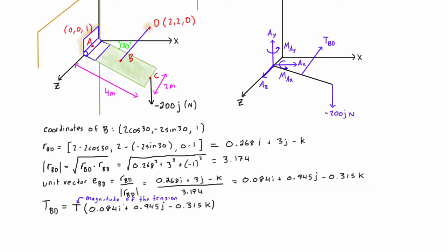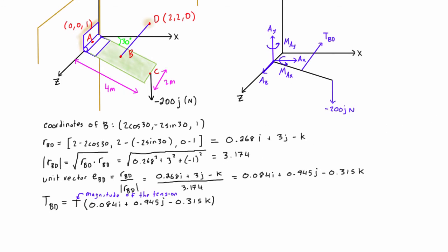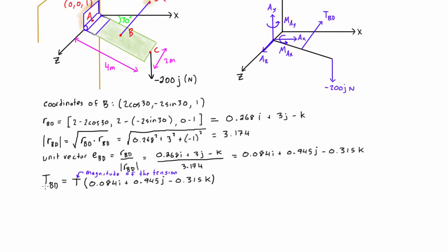Now that we have tension in vector form, we have some expression for all of the forces that show up on a free body diagram. Now we can write the equations for the sum of forces in the three directions.